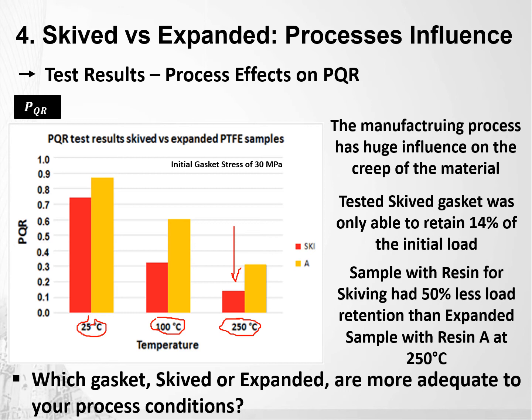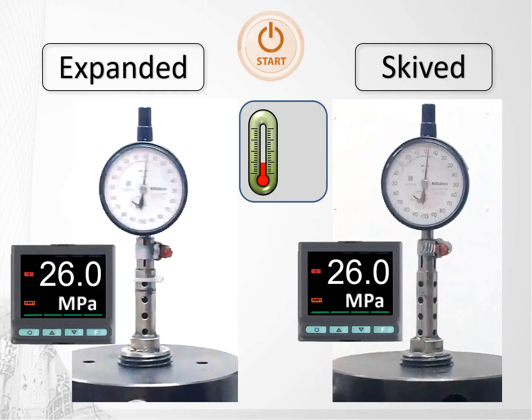So after saying this, what gasket — skived or expanded — is more adequate to your process conditions? To make creep more tangible, we added this slide to make it more visual. This is not a PQR test done in the instrumented machine, but it's similar in many ways. The gaskets were installed in a rig and compressed using a bolt. The gasket stress was measured by the elongation of this bolt, as seen on the dial. The dial moving clockwise indicates load loss. The gaskets were installed with 26 MPa and allowed to relax for one hour. The rig was then heated up to 302°F, which is 150°C, for another hour.